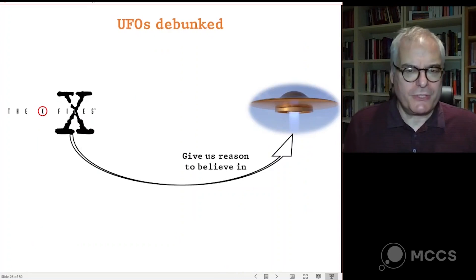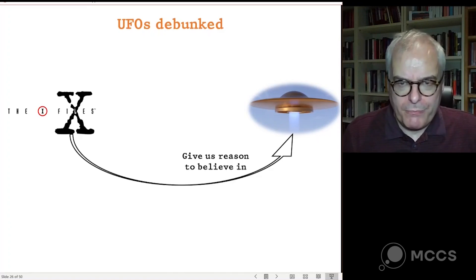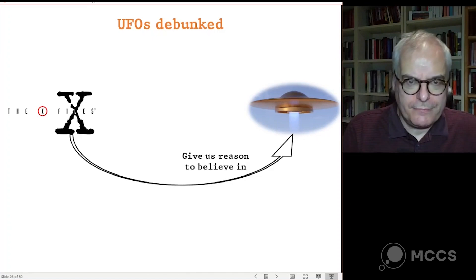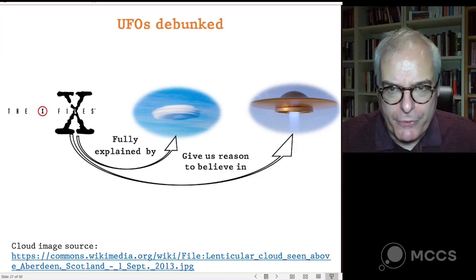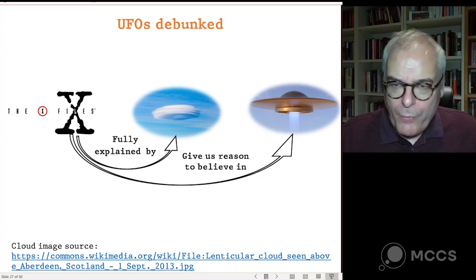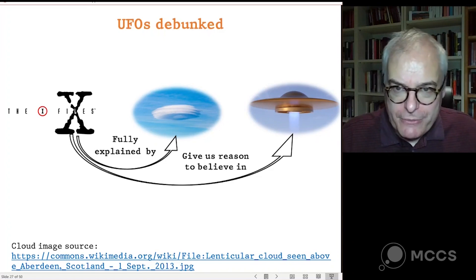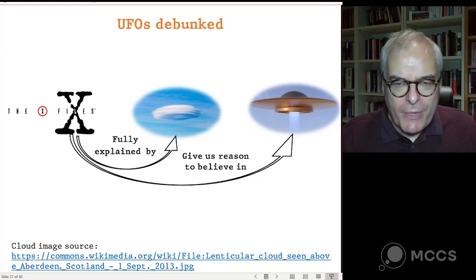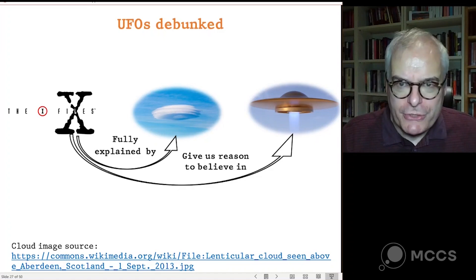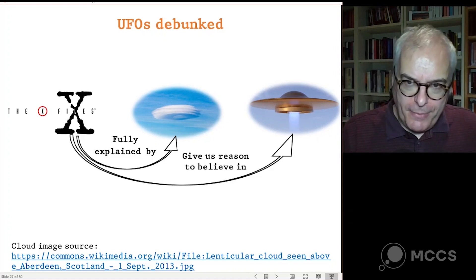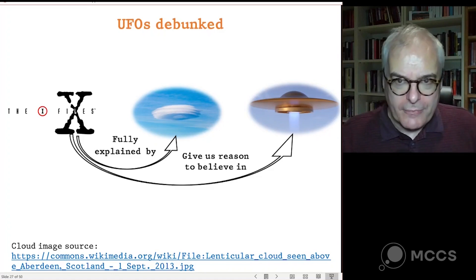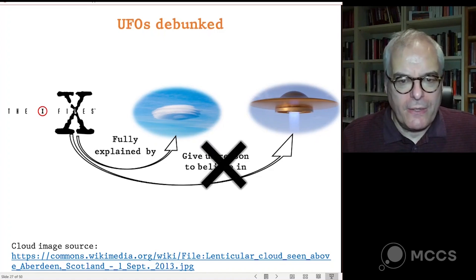So: we start with a bunch of reports of UFOs — prima facie that gives us reason to believe in UFOs. But suppose we dig deeper and find that all of these reports can be explained in other ways without supposing the people had really seen a UFO — whenever they report a UFO it turns out there was a strange cloud formation, or some military aircraft, and we can explain all of these reports in terms that don't mention UFOs at all. In that case we would no longer have reason to believe in UFOs. The reports themselves would be discredited as sources of evidence.